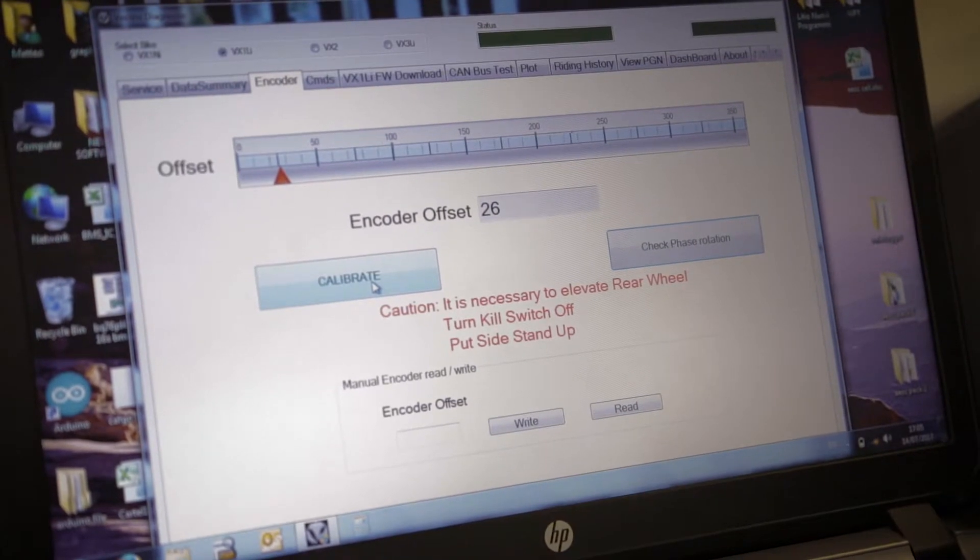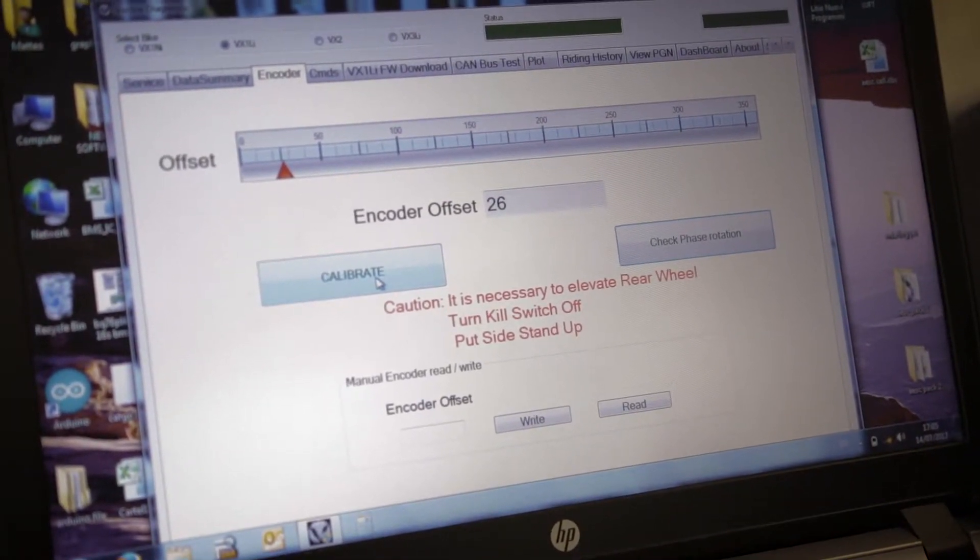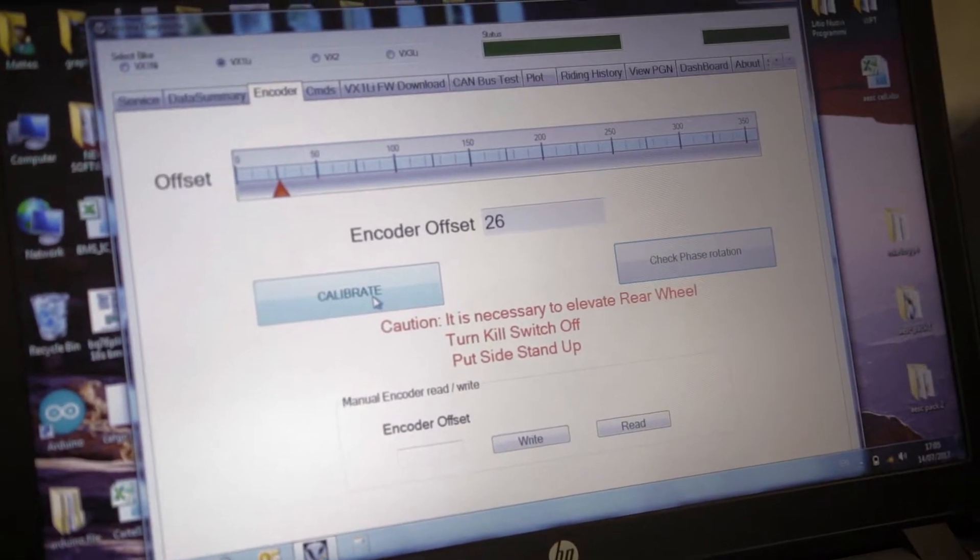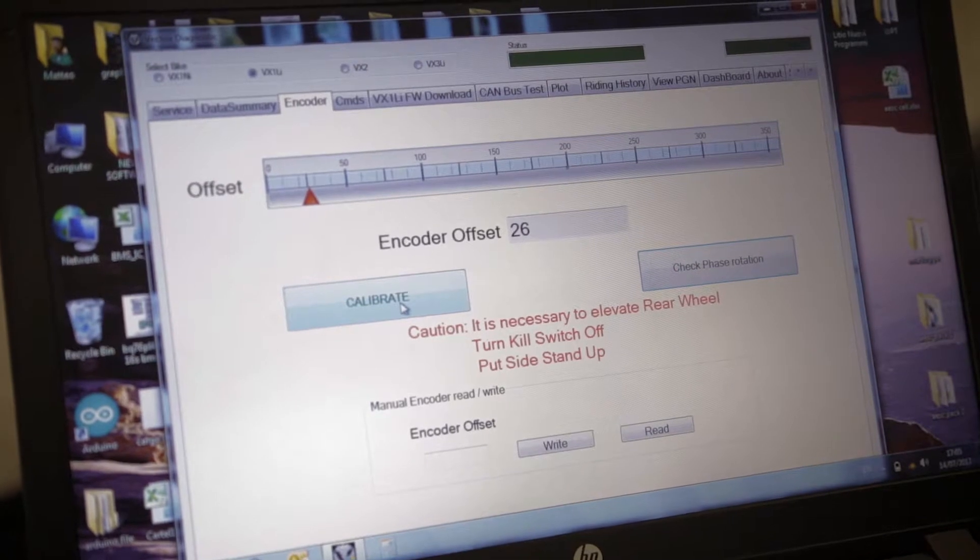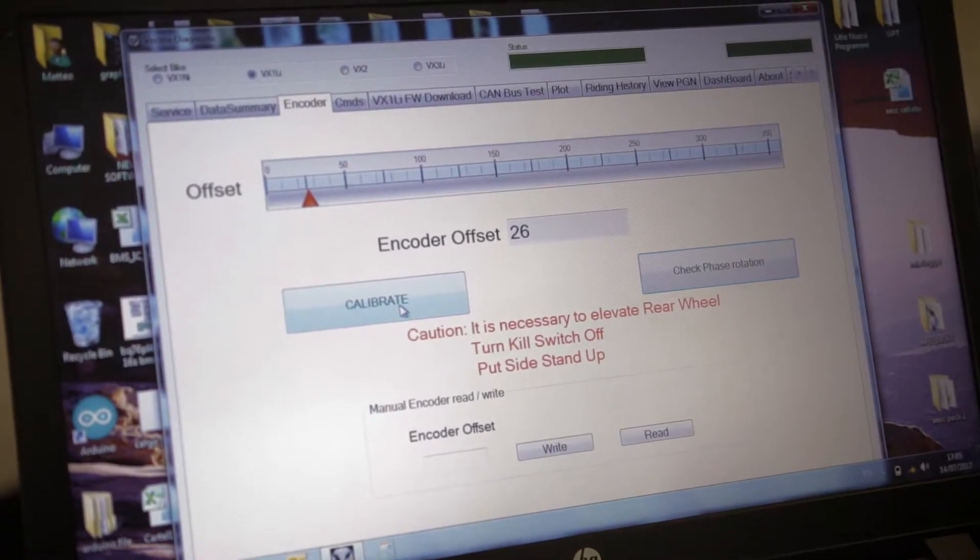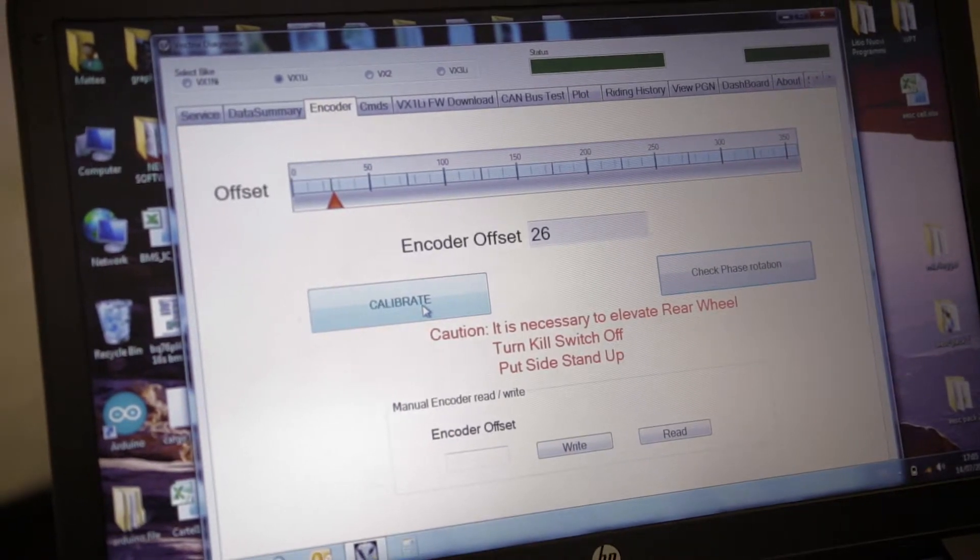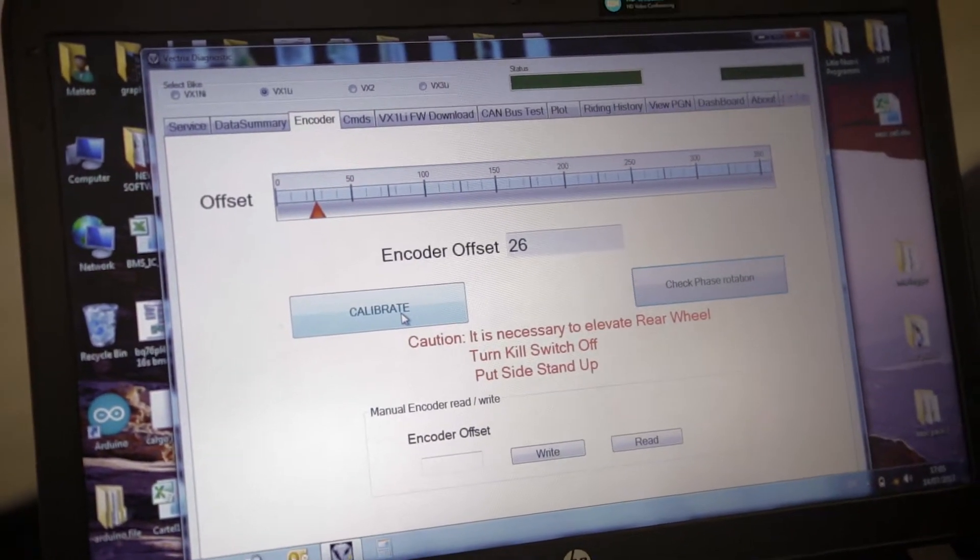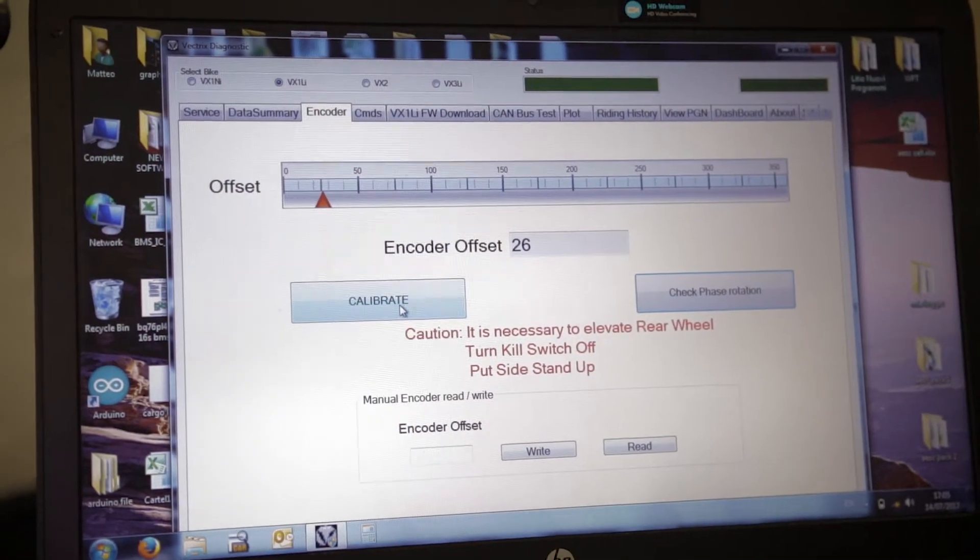Calibration of the encoder is simply a procedure that lets the motor controller recognize the position of the motor in reference to the encoder. Once they are calibrated, they're in phase and the motor has optimal efficiency. If for any reason this angle is wrong, the motor will behave badly or when you accelerate it will not be smooth.